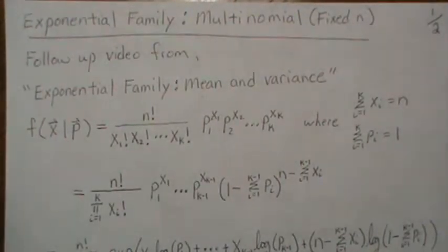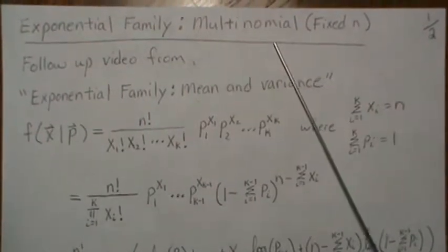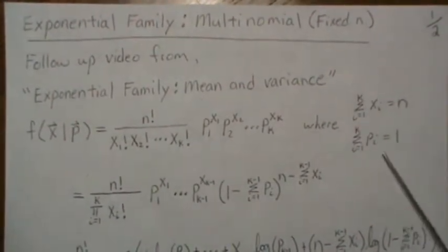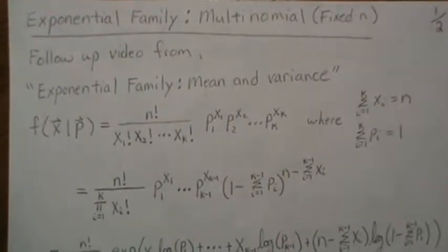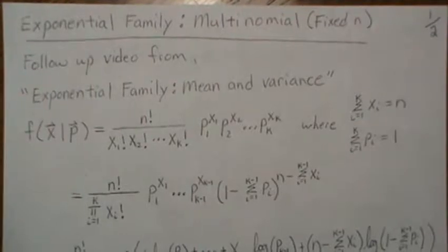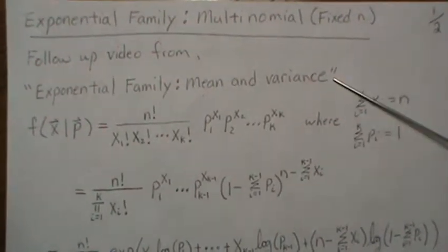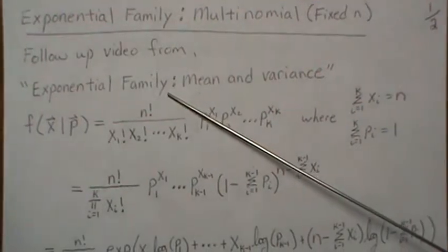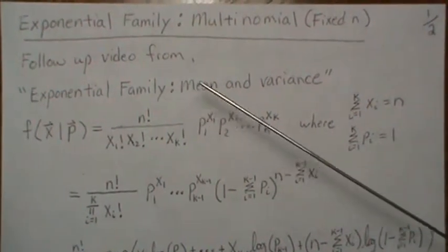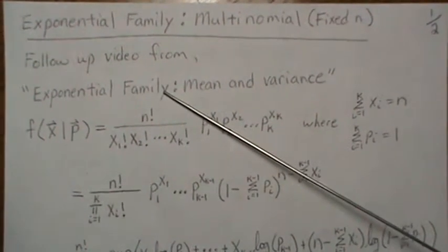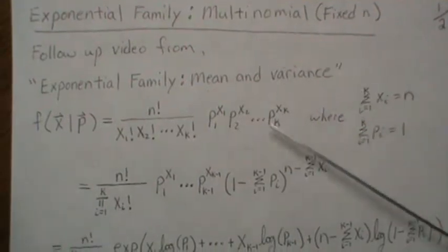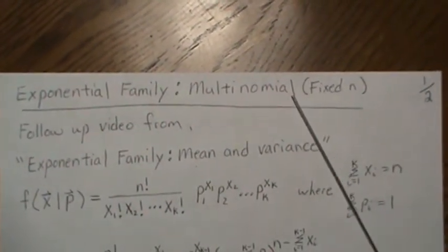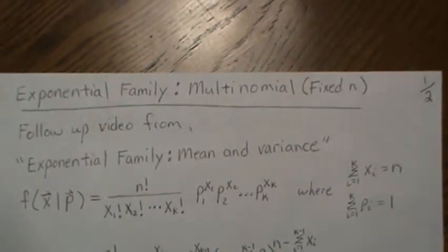Hello. In this video we're going to look at the exponential family of distributions, specifically the multinomial distribution. In order for it to be a part of the exponential family of distributions we have to fix n. This is similar to what we did in the binomial distribution — we have to fix n. This is a follow-up video where we derived the mean and variance of an exponential family of distributions generically, and what we want to show is that the techniques work for specific distributions within that. The first thing we want to do is show that the multinomial distribution fits into the exponential family.